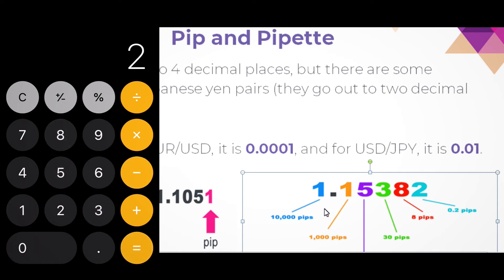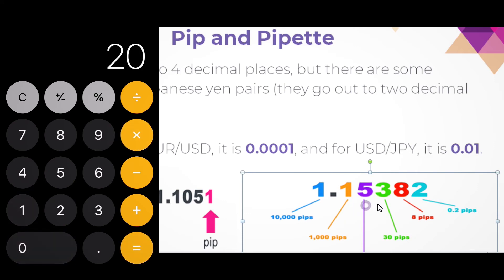This means we've made 2 PIPs in profits. We multiply our 2 PIPs by $10, so we just made $20.